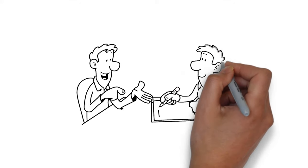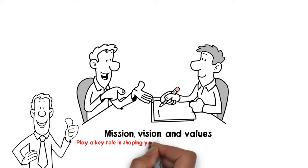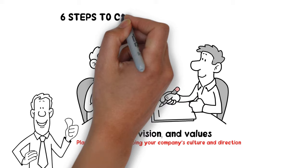Welcome to this video on how to outline your mission, vision, and values. These are three essential components of any successful business, and they play a key role in shaping your company's culture and direction. In this video, we'll walk you through the steps for creating a clear and concise mission, vision, and values statement for your business.